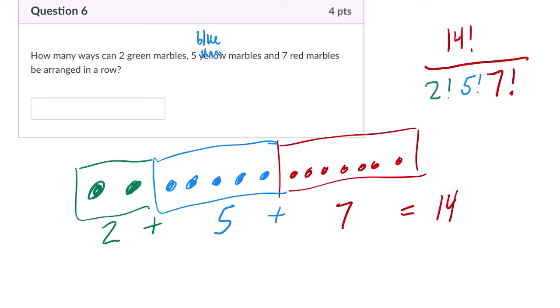By dividing by those identical arrangements, we get a number of unique permutations. This is called distinguishable permutation. So you can enter it in a calculator.